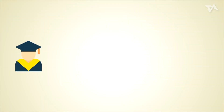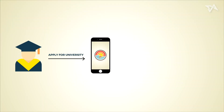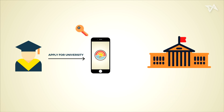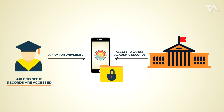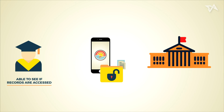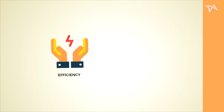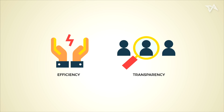For example, when students apply to university via Opet's platform, they will provide the unique key of their records to the university. With that, the university will be able to access their latest academic records. Students will also be able to see if their records have been unlocked or at least considered for application. This boosts efficiency and transparency compared to traditional methods.